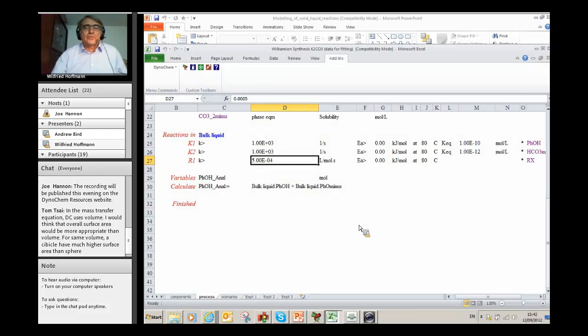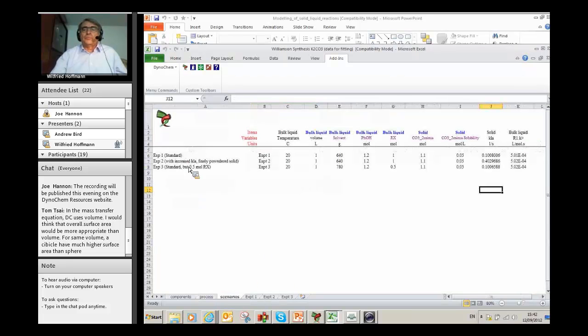I use the Williamson synthesis example. As you see here, the analytics I had to define - what DynoChem sees from the analytical data is actually the sum of phenol and phenolate. The scenarios now contain all the three experiments.